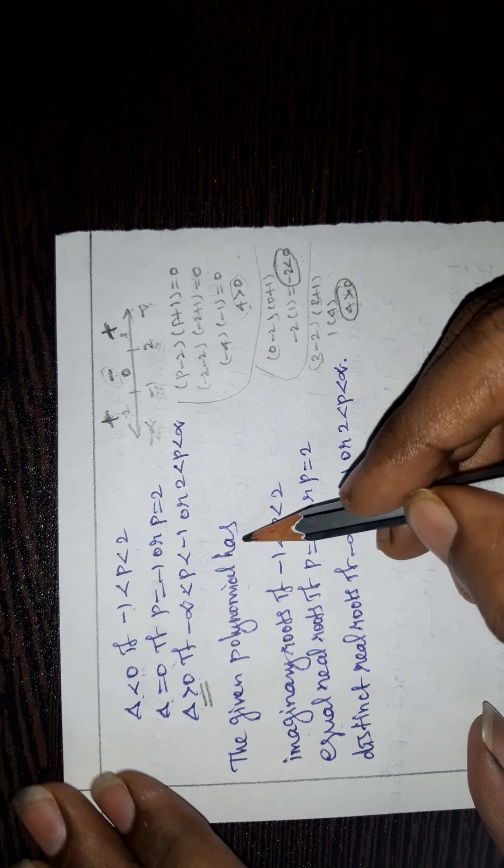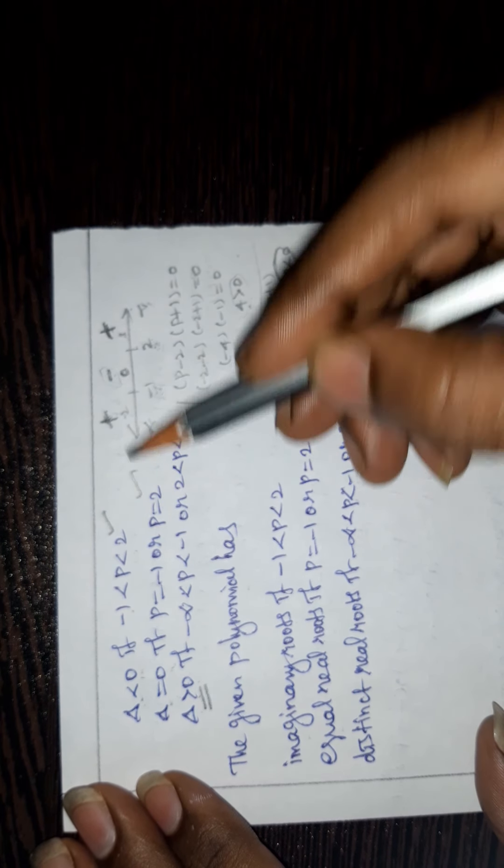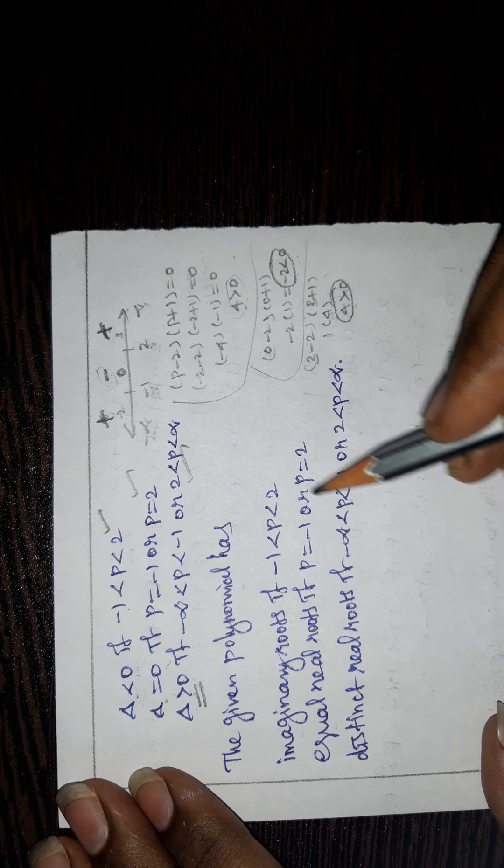The given polynomial has imaginary roots when delta < 0, equal real roots when delta = 0, and distinct real roots when delta > 0.